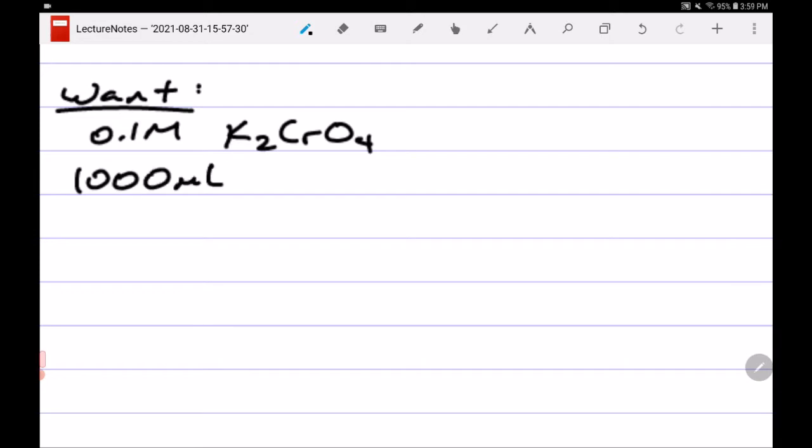Alright, let's say we want to make a 0.1 molar solution of K2CrO4 and we're going to use a 1,000 mL volumetric flask. We need to do the calculations to figure out how much mass to use because K2CrO4 is a solid. So in the lab, we'll be measuring this out by its mass because it's solid.